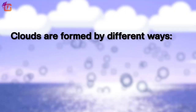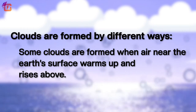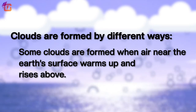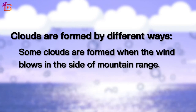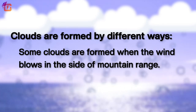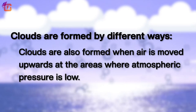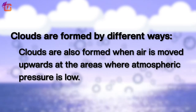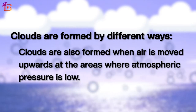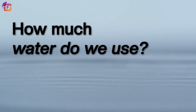Clouds are formed in different ways. Some clouds are formed when air near the earth's surface warms up and rises. Some clouds are formed when wind blows against the side of a mountain range. Clouds are also formed when air is moved upwards in areas where atmospheric pressure is low.